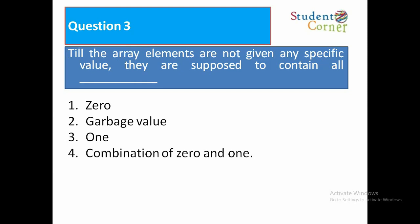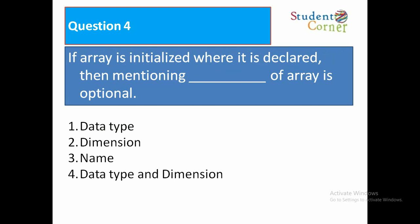Question number three: Till the array elements are not given any specific value, they are supposed to contain — Option 1: Zero. Option 2: Garbage value. Option 3: One. Option 4: Combination of zero and one. The answer is garbage value.